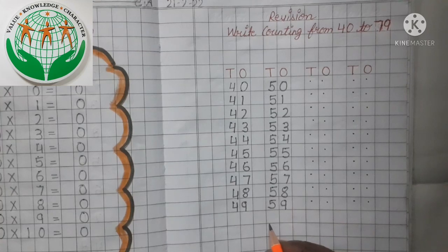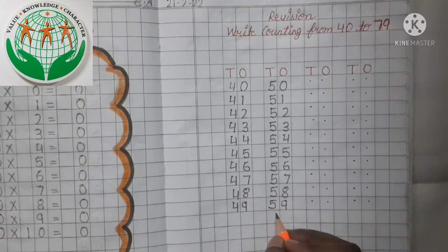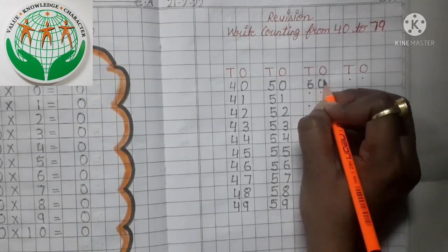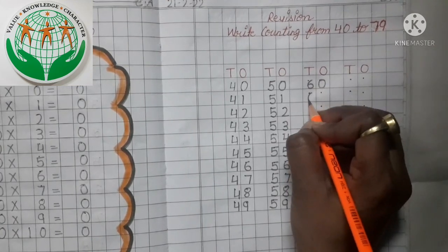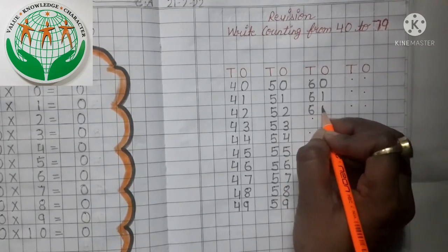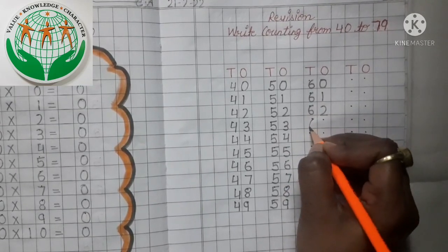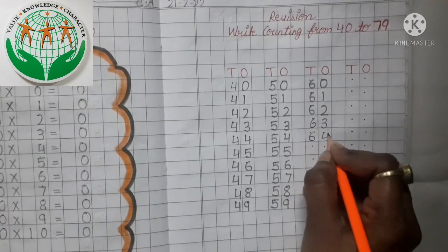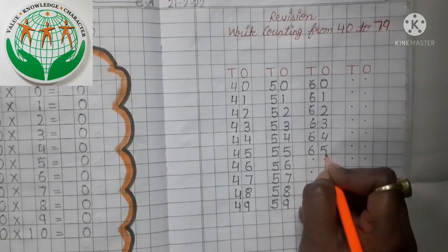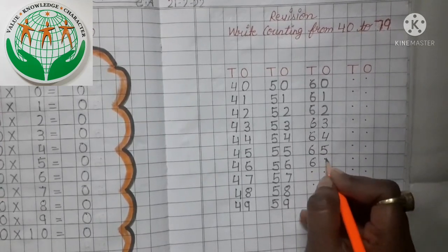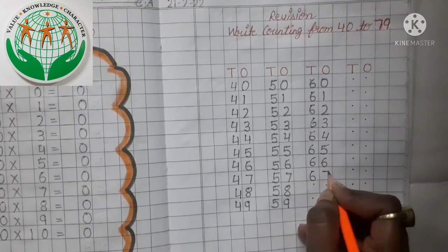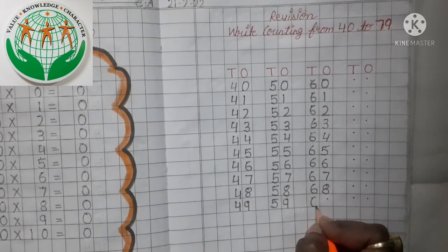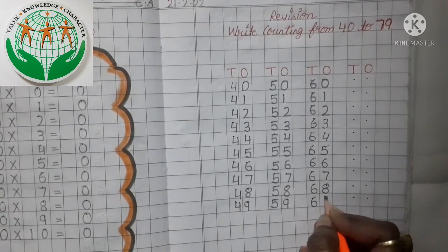Now tell me, what comes after 59? Yes, number 60. So our next line, we will start from number 60. 60, 61, 62, 63, 64, 65, 66, 67, 68, and 69.